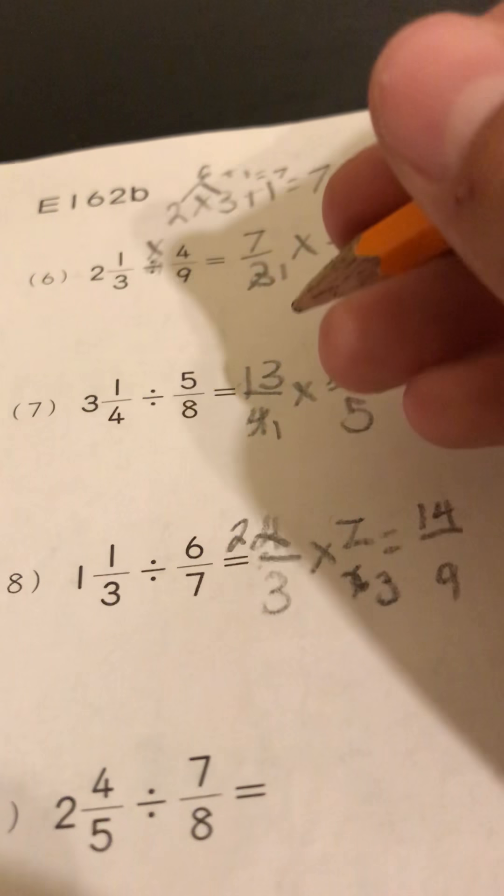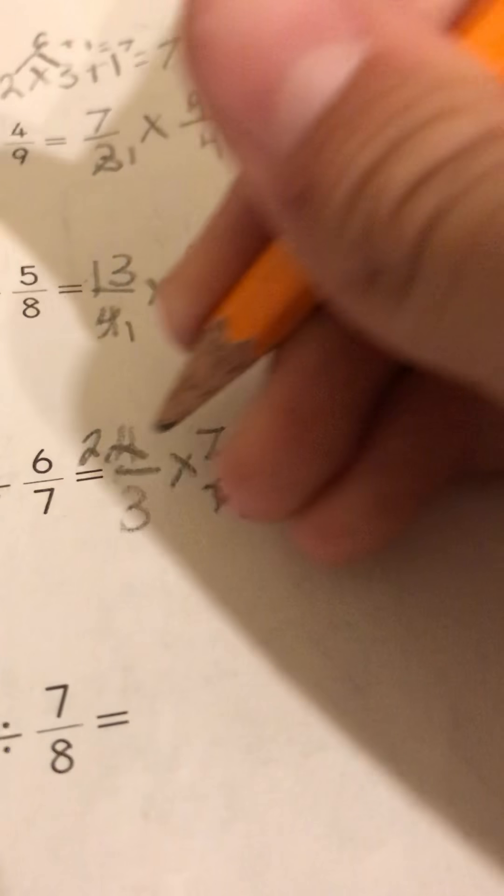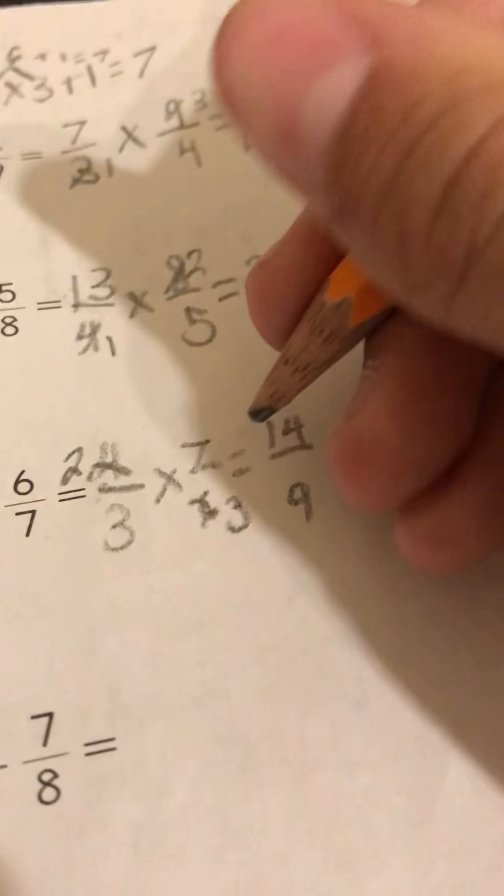Basically what you do is you multiply the top number by the other top number and the bottom number by the other bottom number.